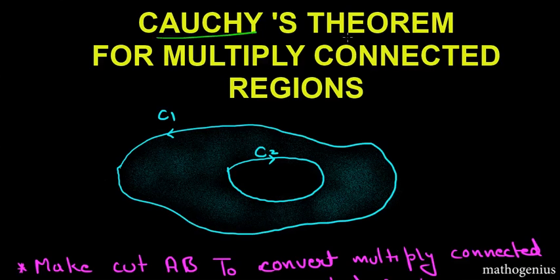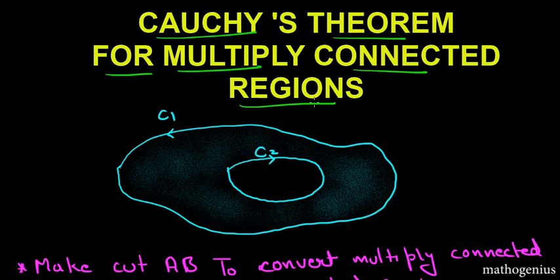This video is about Cauchy's theorem for multiply connected regions. We will see some consequences of Cauchy's theorem and also prove Cauchy's theorem for multiply connected regions. A multiply connected region is a region like the shaded part in between two closed curves.